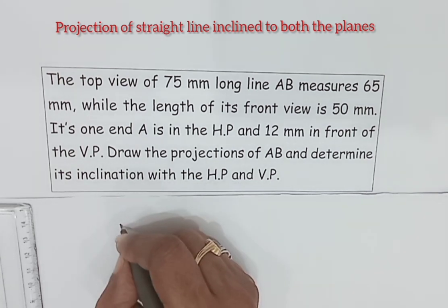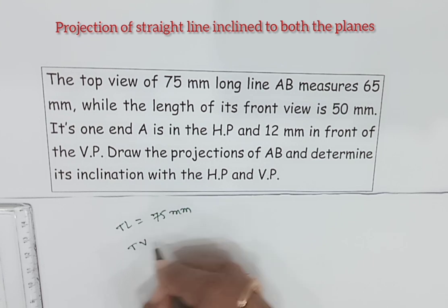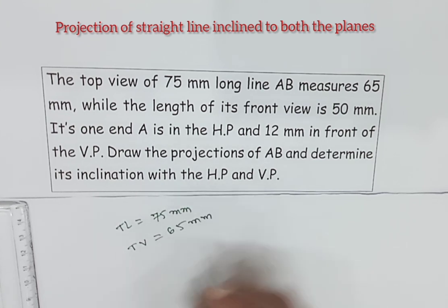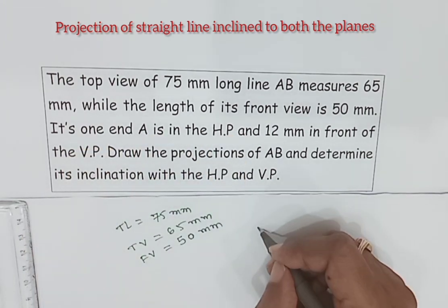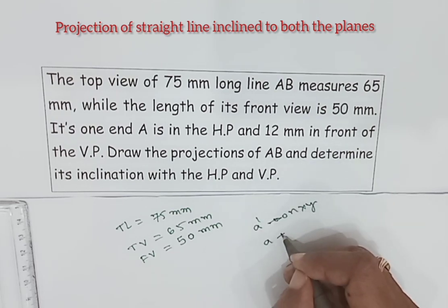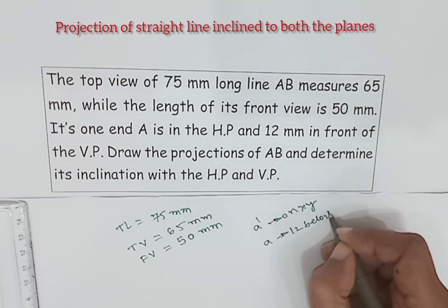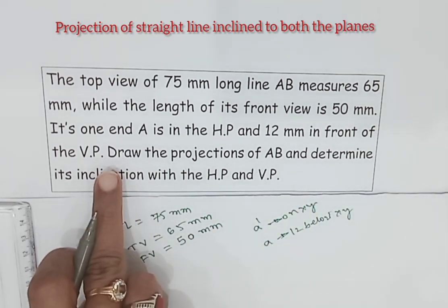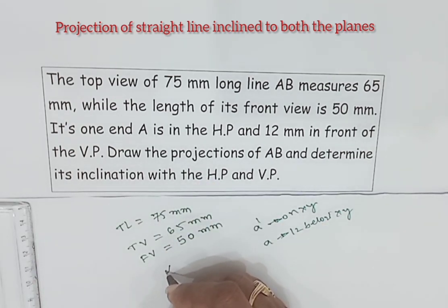Here the given data is: true length is 75 mm and top view is 65 mm. Front view is 50 mm and its one end A is in the HP. That is A dash on XY line and A 12 mm in front, that is top view 12 mm below XY. And what they are asking us to do? Draw the projections of AB and determine its inclination with the HP and VP. That is we have to find alpha and beta values.